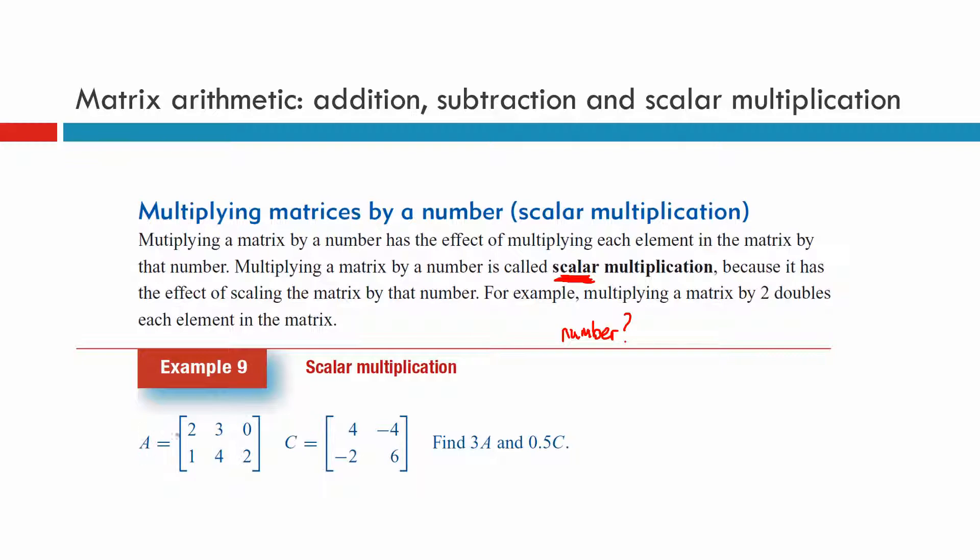Here we've got this example. A is this matrix. C is this other matrix. We have to find three A and we have to find 0.5C. Let's do the three A first.